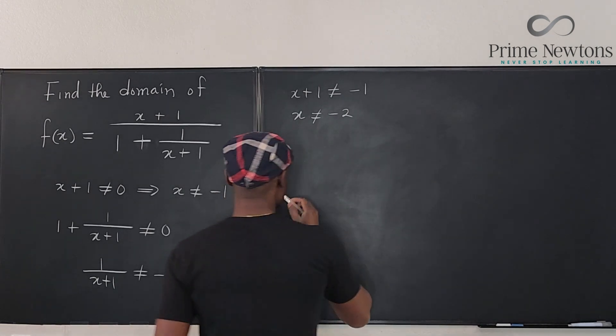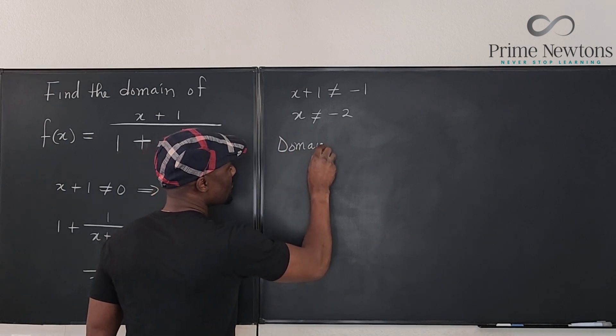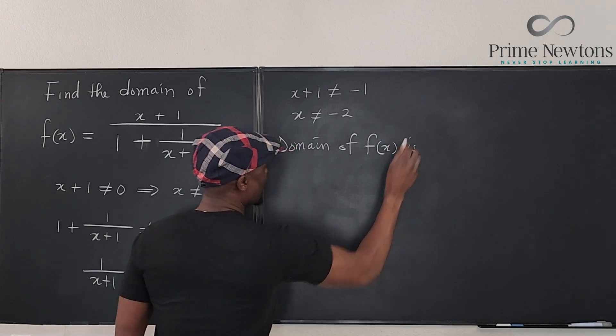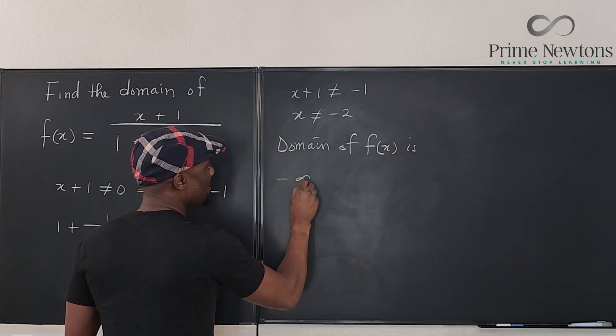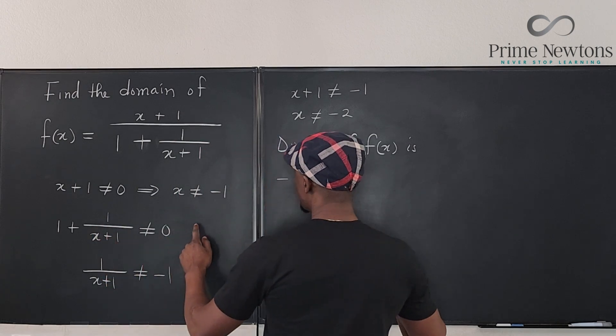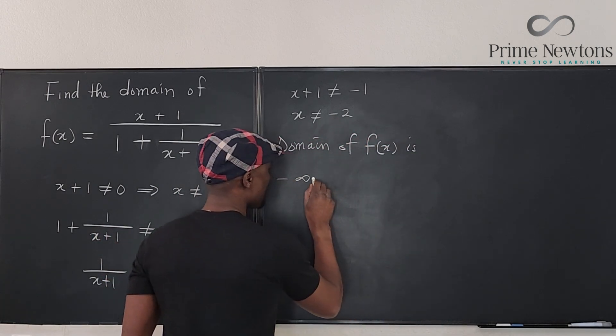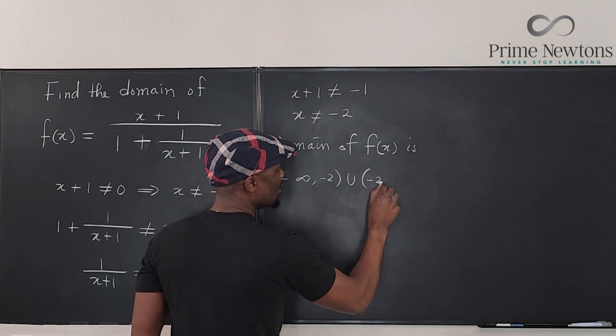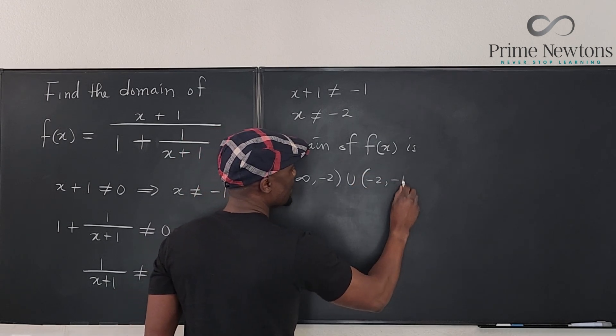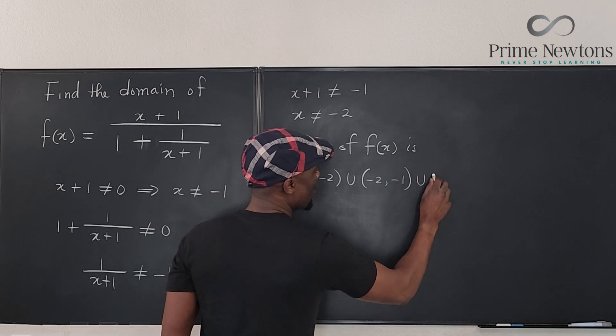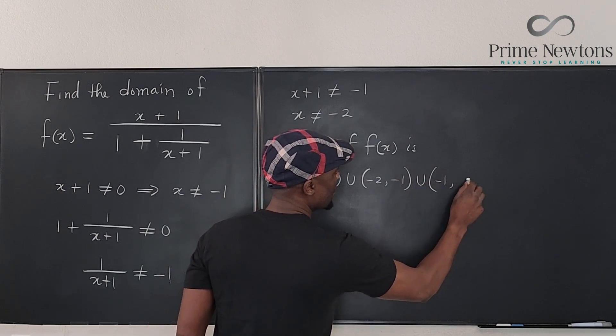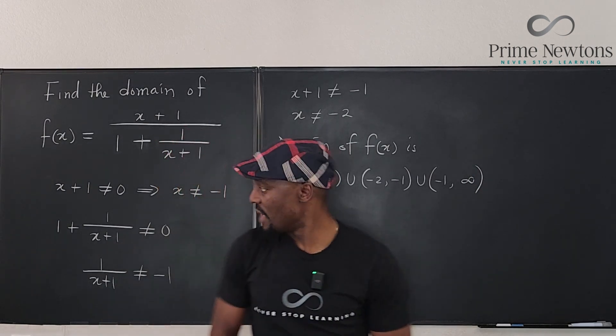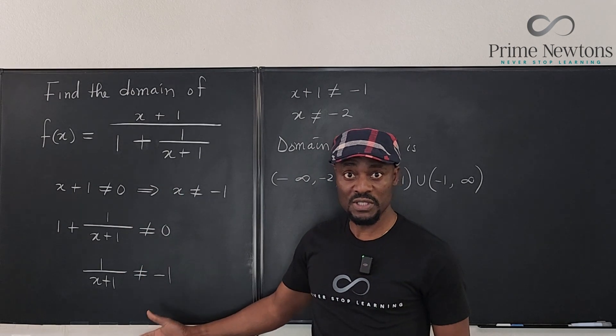So we can conclude that the domain of f of x is all values of x from negative infinity until you get to negative 2, union all values from negative 2 all the way to negative 1, union all values from negative 1 to infinity. This is the domain of the function that we have. So this is one approach you could take.